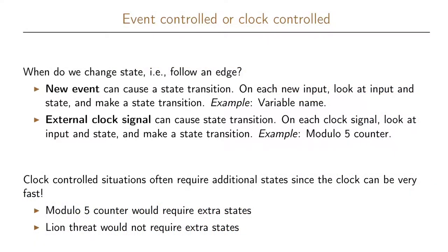There are two situations that we need to distinguish when it comes to changing the state in the graph. One of them is event control and the other one is called clock control. They differ in fundamental ways.